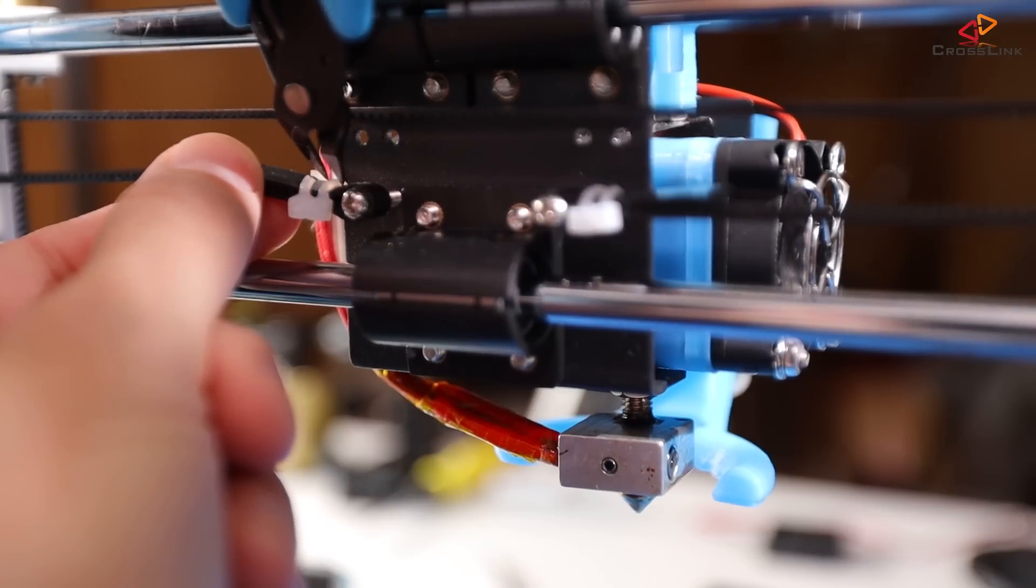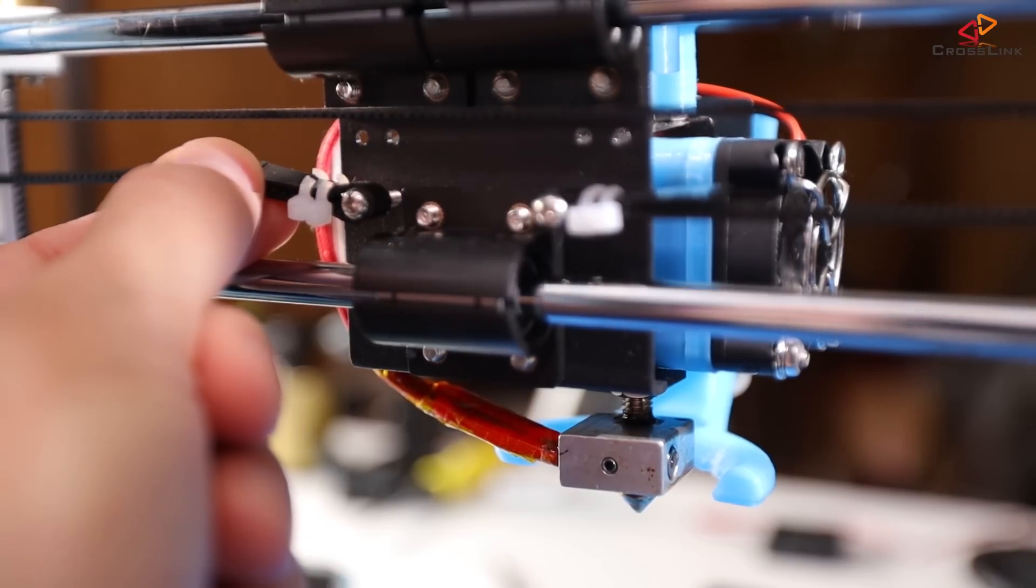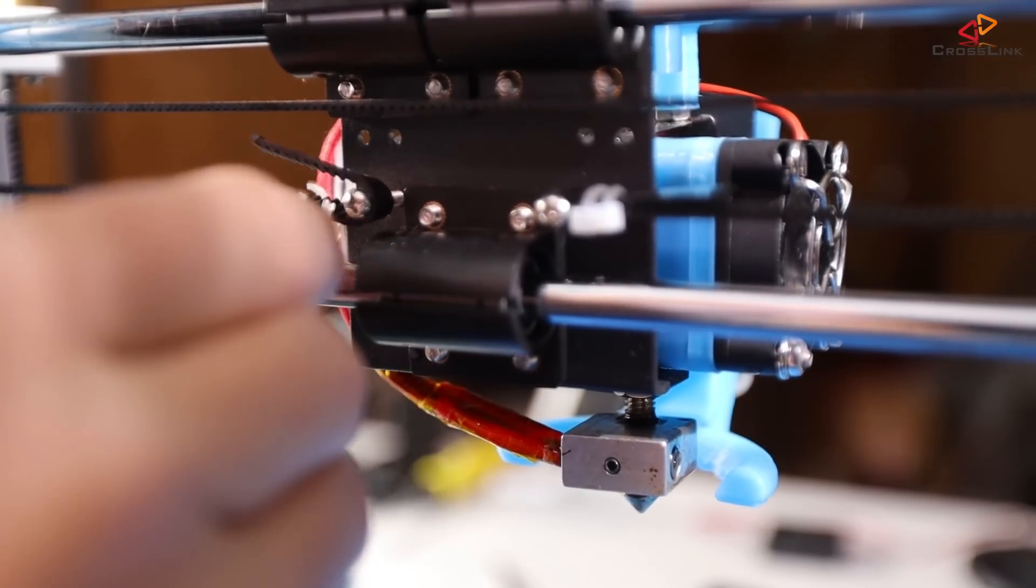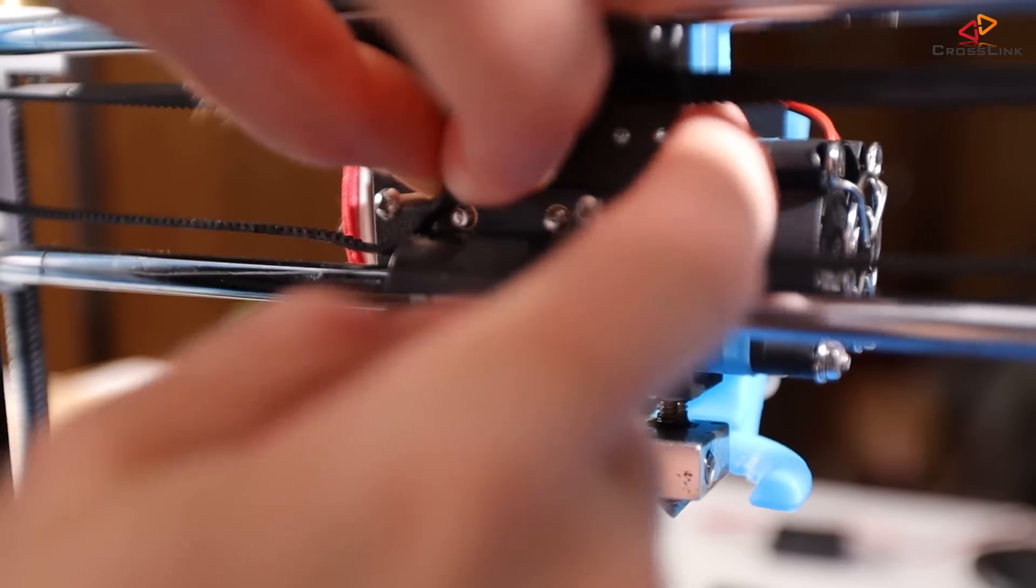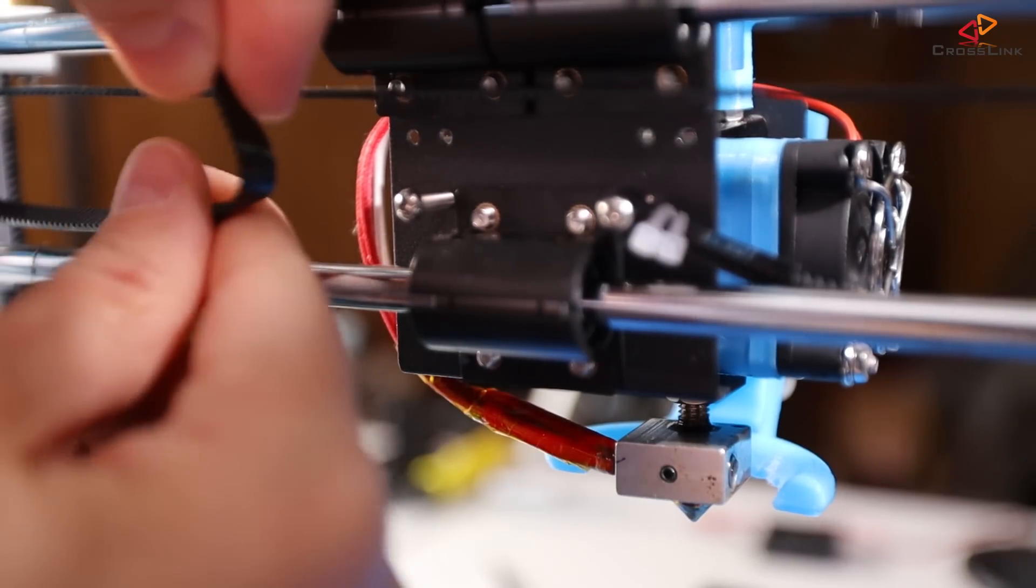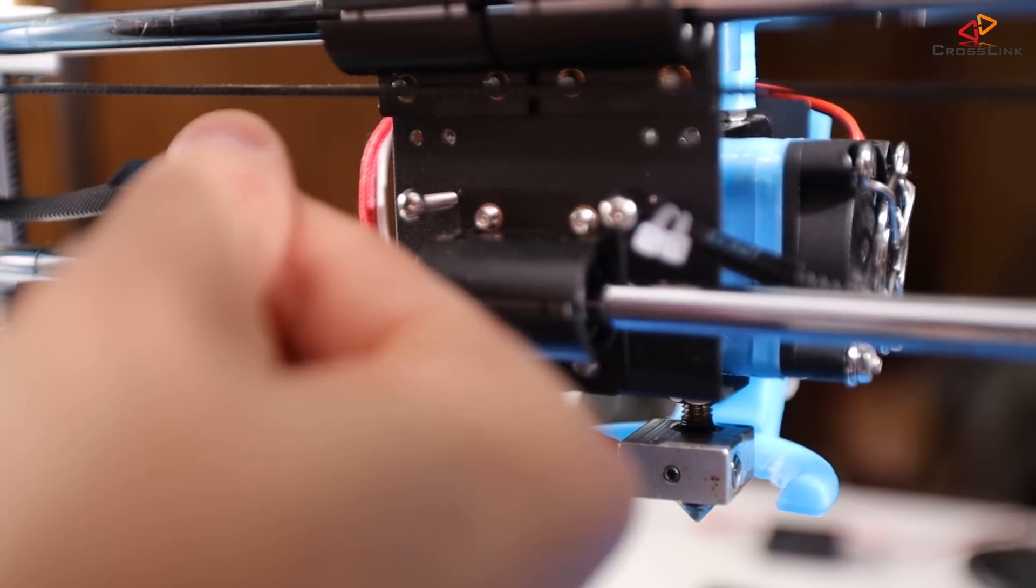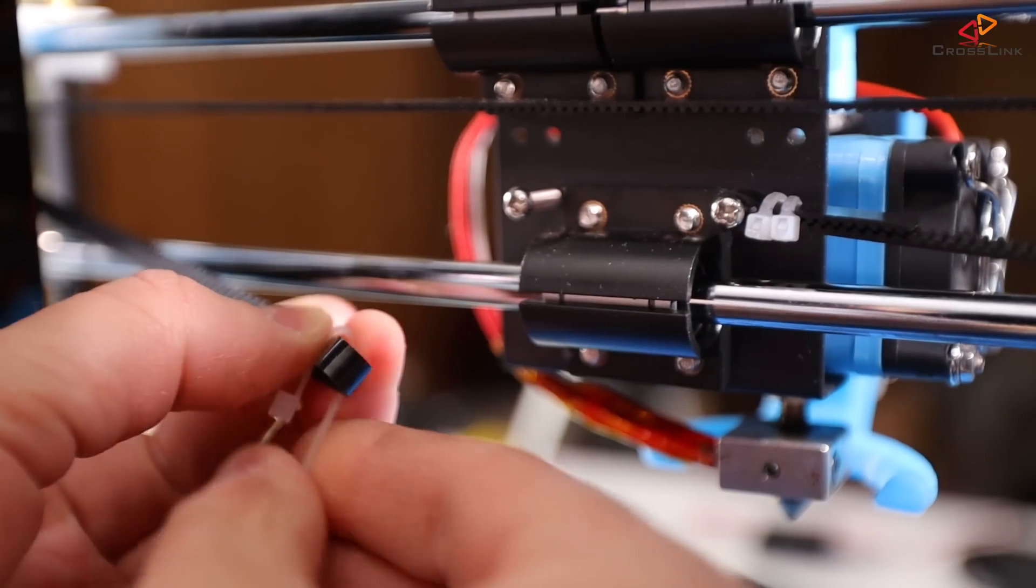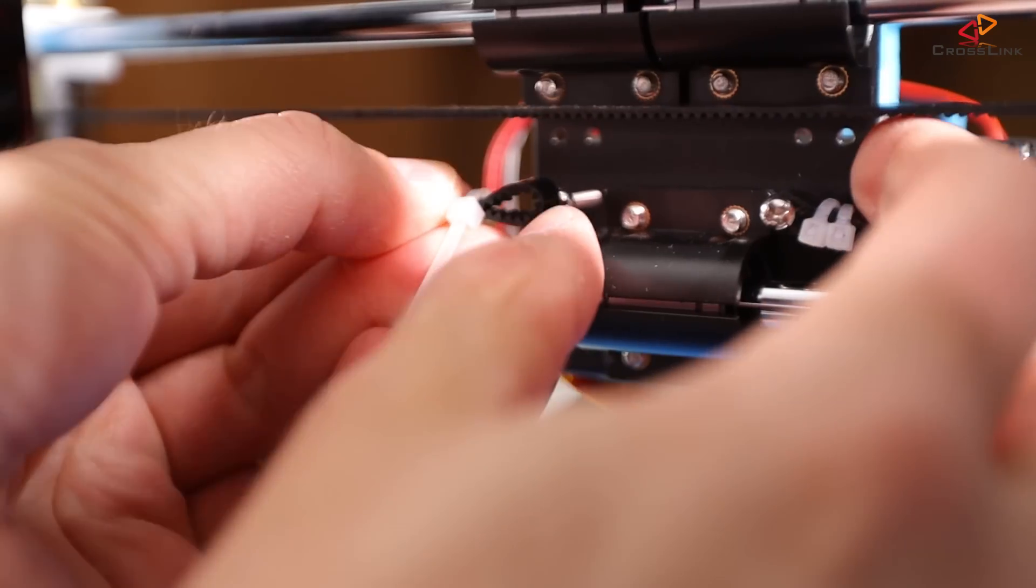For the X axis, this would mean that we would have to cut the zip tie that holds one of the belts behind the X carriage. Then we need to increase the tension of the belt manually until we think it's strong enough and then fix the belt again using a new zip tie.